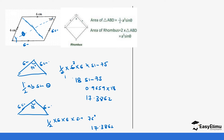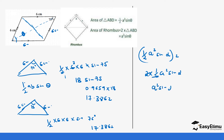Instead of repeating that calculation, we can derive a formula. The area of one triangle is ½ × a² × sin(α). Multiplying by two for both triangles: 2 × ½ × a² × sin(α) = a² × sin(α). So the formula for the area of a rhombus given a side and an angle is a² × sin(α). If you don't remember this formula, just calculate the area of one triangle and multiply by two.